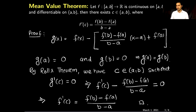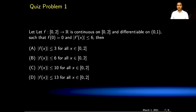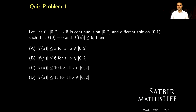You can observe that the Mean Value Theorem is a generalization of Rolle's Theorem: if f(a) = f(b), the difference quotient becomes zero and we recover Rolle's Theorem. Here I have one quiz problem for you to practice — please pause the video for a minute or two and work on it. This is also the end of this video tutorial. Thank you very much for watching; I will see you in the next video.